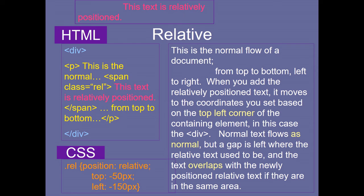For relative positioning, create a class with position relative, top 50px, left minus 150px. Once you apply the relative class, the position does not start from the left corner of the page — it starts from the previous content onwards, from the previous box onwards. So you see it comes after finishing the previous element's data, going top to bottom, left to right.